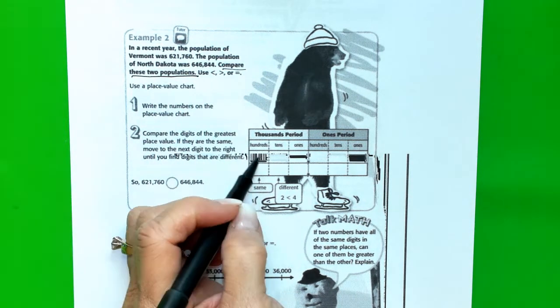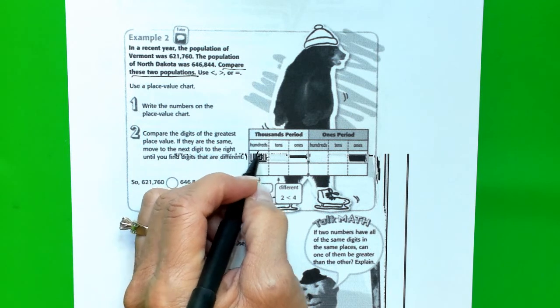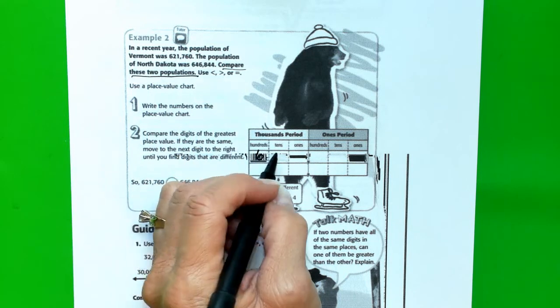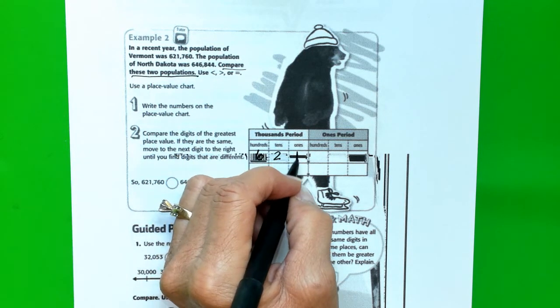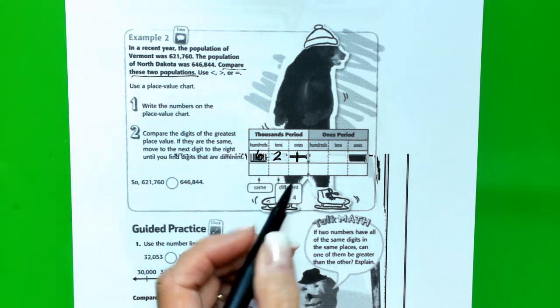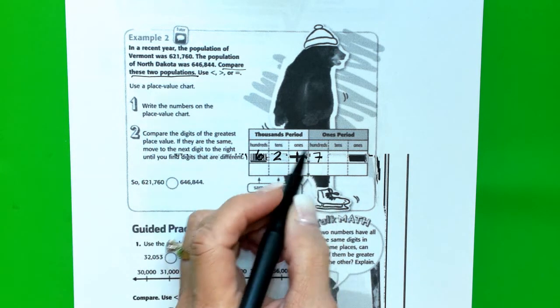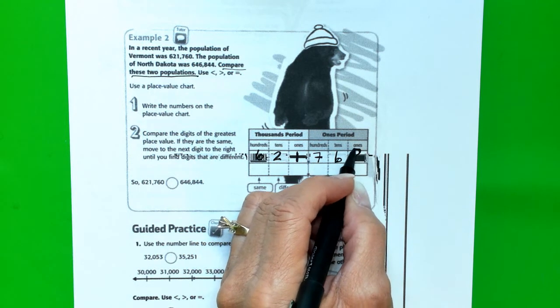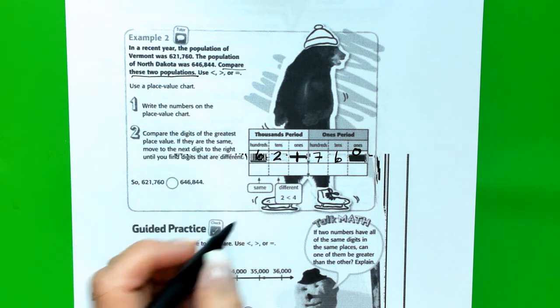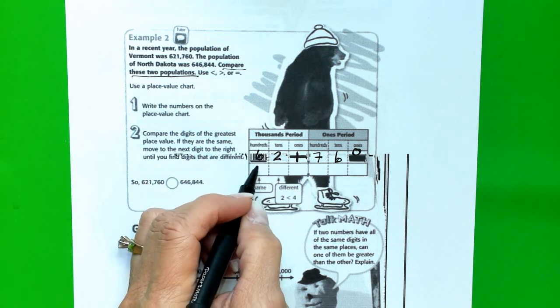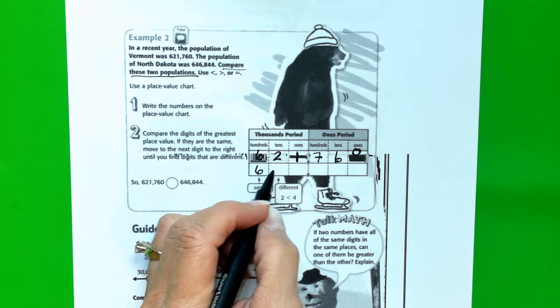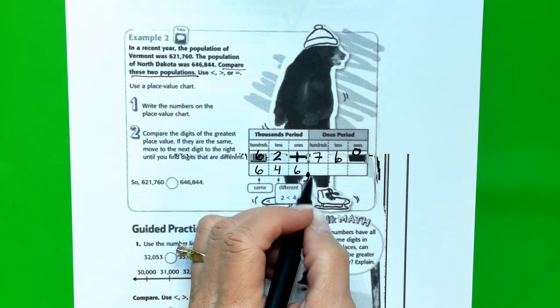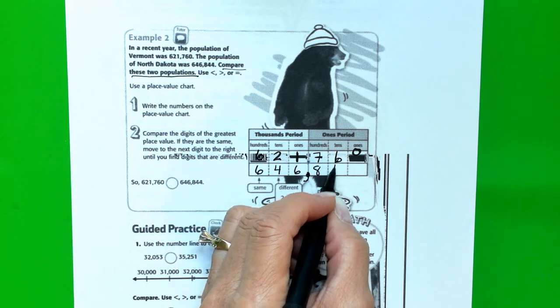My printer sort of freaked out. So, we're going to make do. I'm going to try to write that nice and dark so you guys can see that. 621,760. I'm going to put the zero right up here because that black box is in the way. And our other population is 646,844.